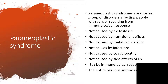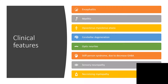The entire nervous system is affected. The clinical features will be encephalitis affecting the entire brain, myelitis, opsoclonus-myoclonus ataxia, cerebellar degeneration, optic neuritis, stiff-person syndrome — due to decreased gamma-aminobutyric acid — sensory neuropathy, and necrotizing myelopathy.